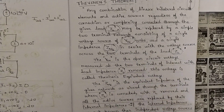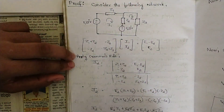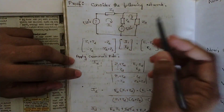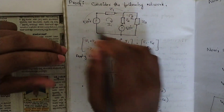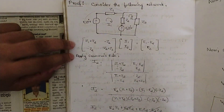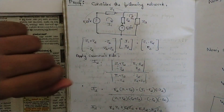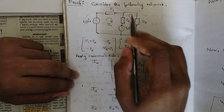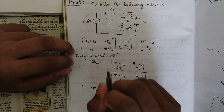Now let's look at the proof, in order to understand the steps to solve problems related to Thevenin's theorem. Consider the following network — a complex network with two voltage sources. Unlike superposition theorem, here we consider both voltage sources at the same time. We have two loops, named with currents I1 and I2.